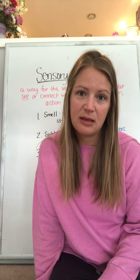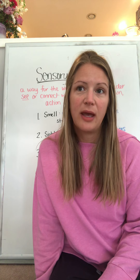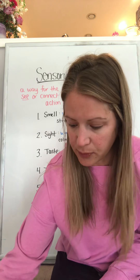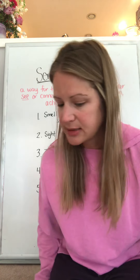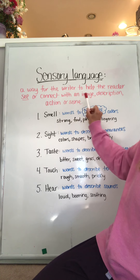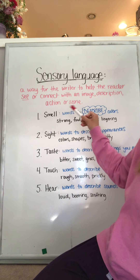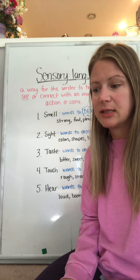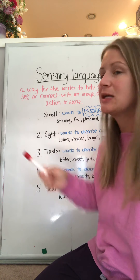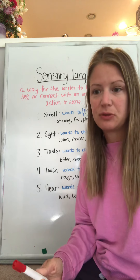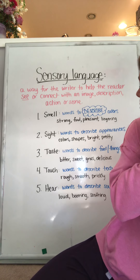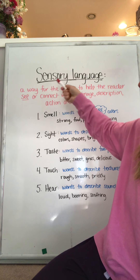Just like the poetic devices that we talked about in our last unit, it's a way that the author pulls you in. So to go along with that, we have a quick review about sensory language. Sensory language is a way for the writer to help the reader see or connect with an image, description, action, or scene. The writer builds on each one of your five senses while writing so that you are able to connect with what is going on in the story and use your imagination to create a picture in your mind of what is happening — hence the word sensory language.